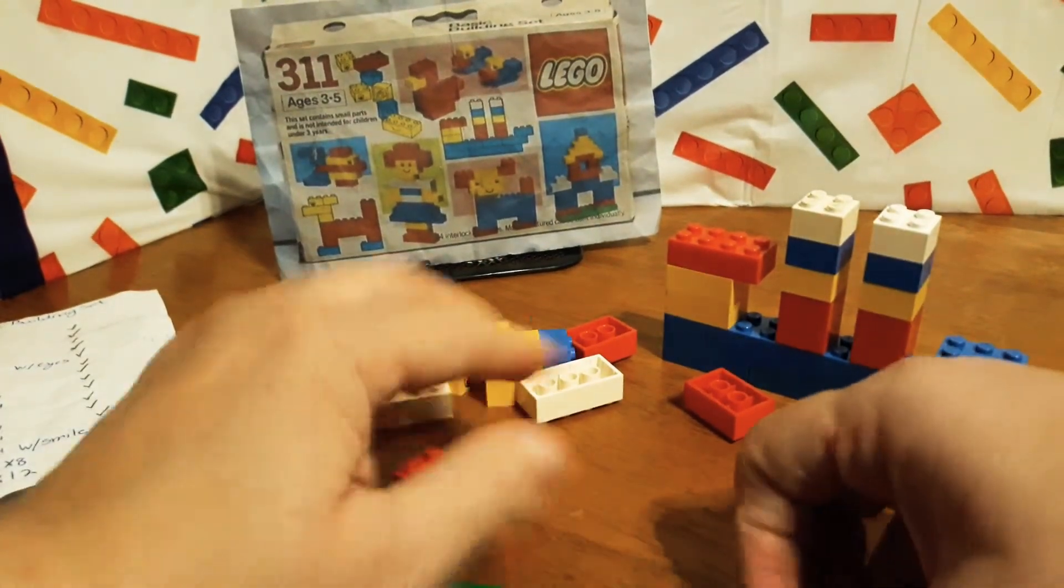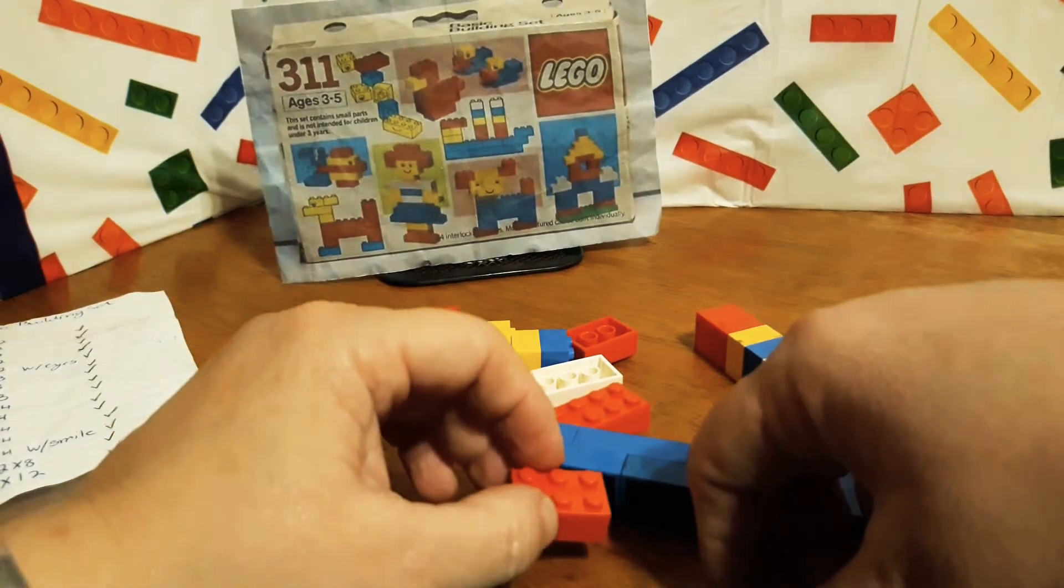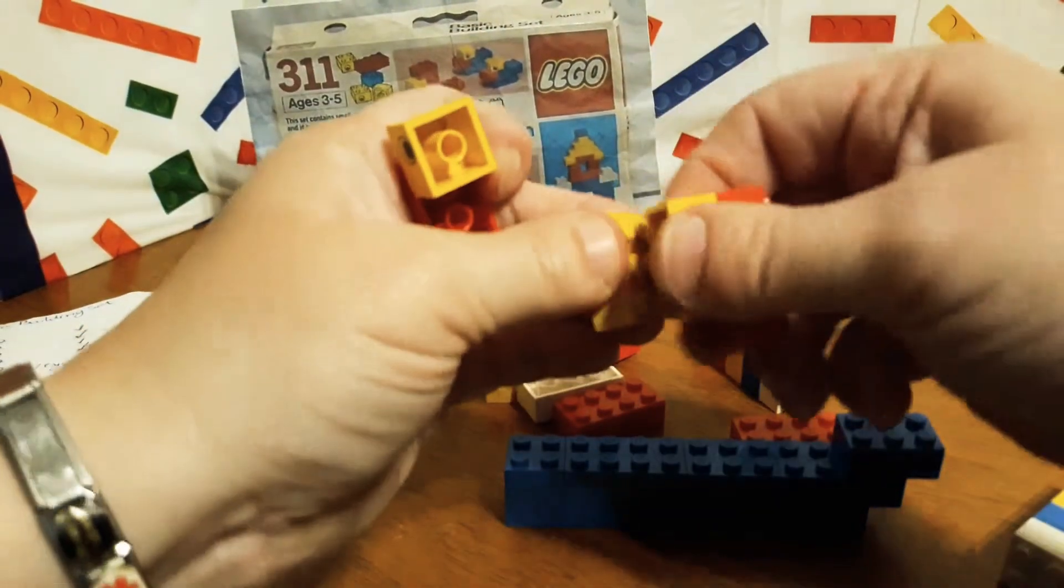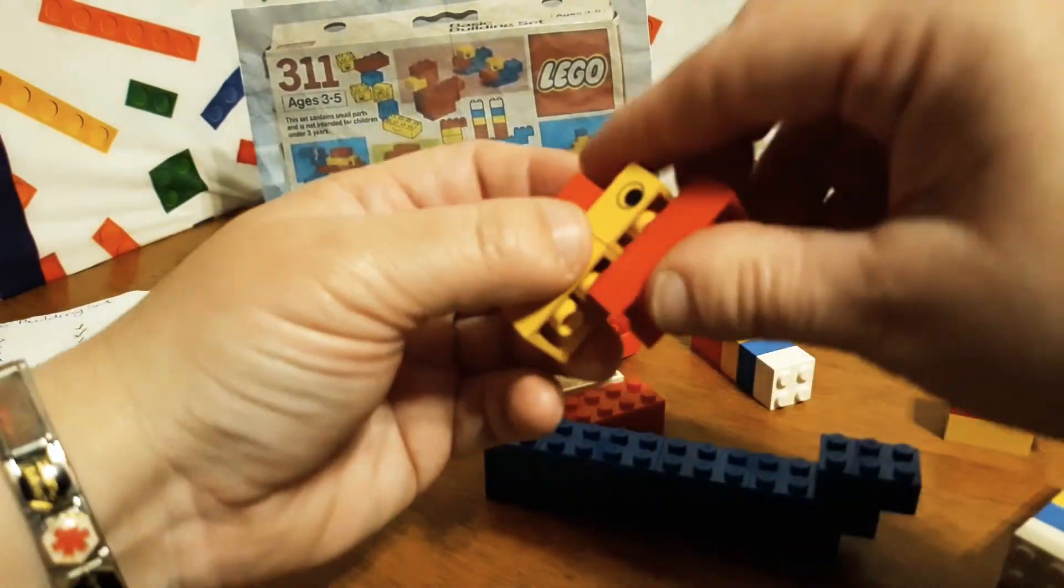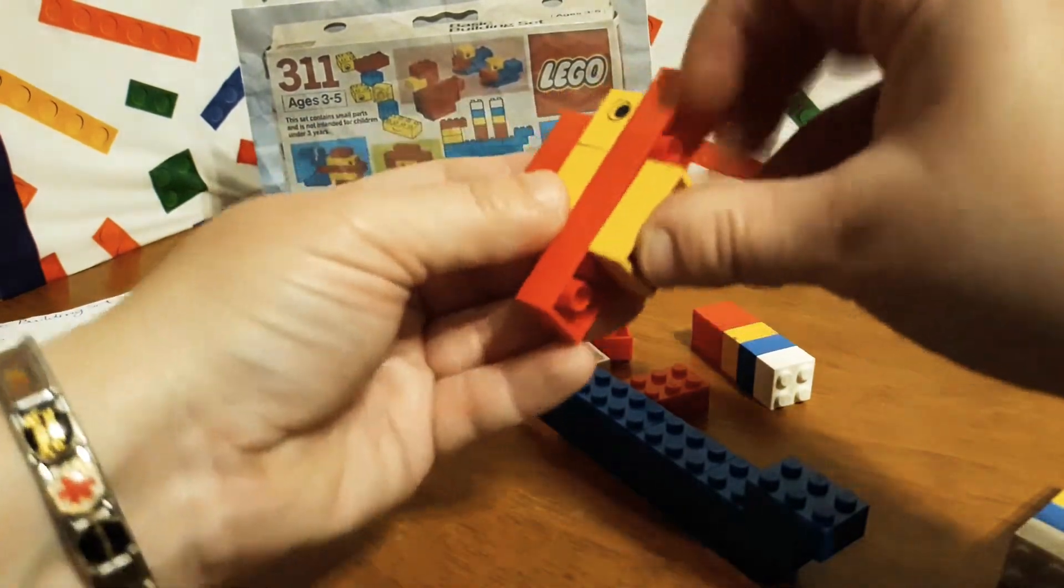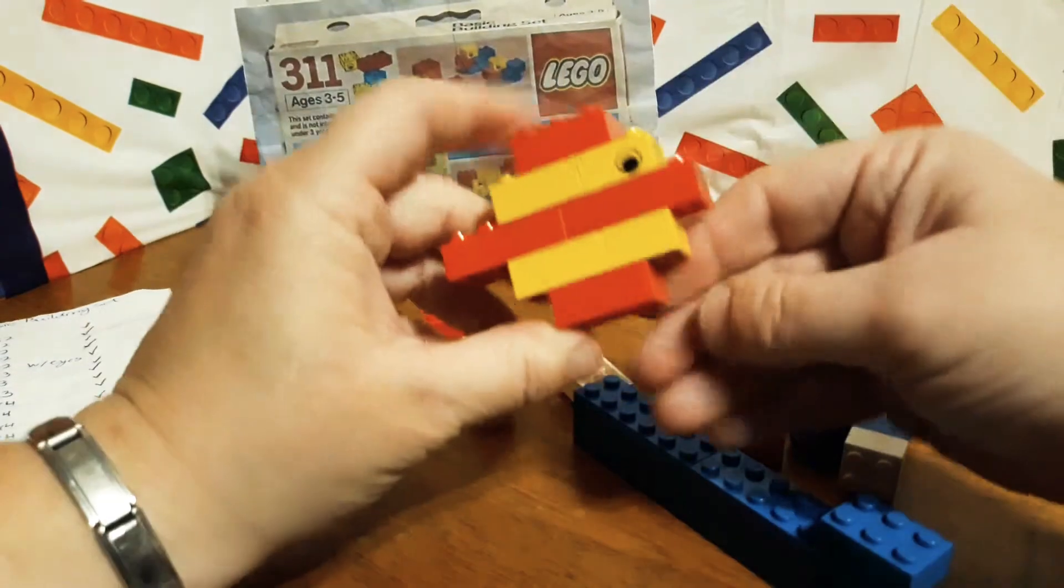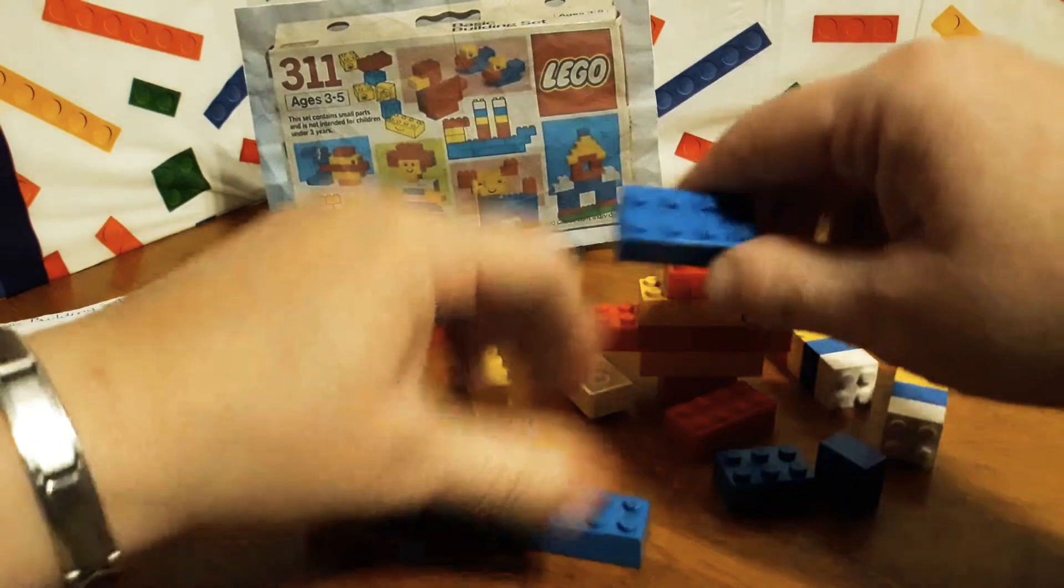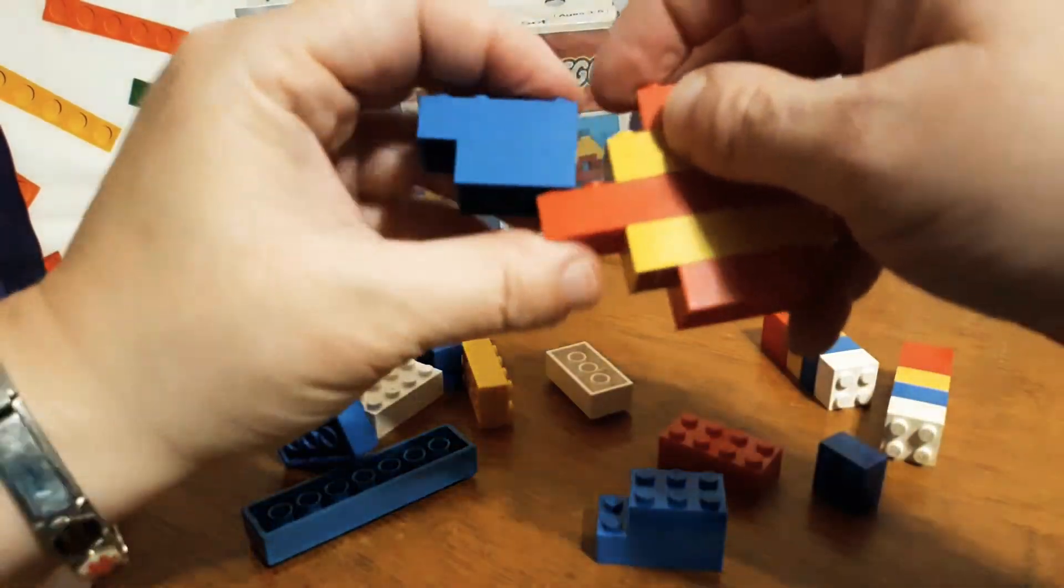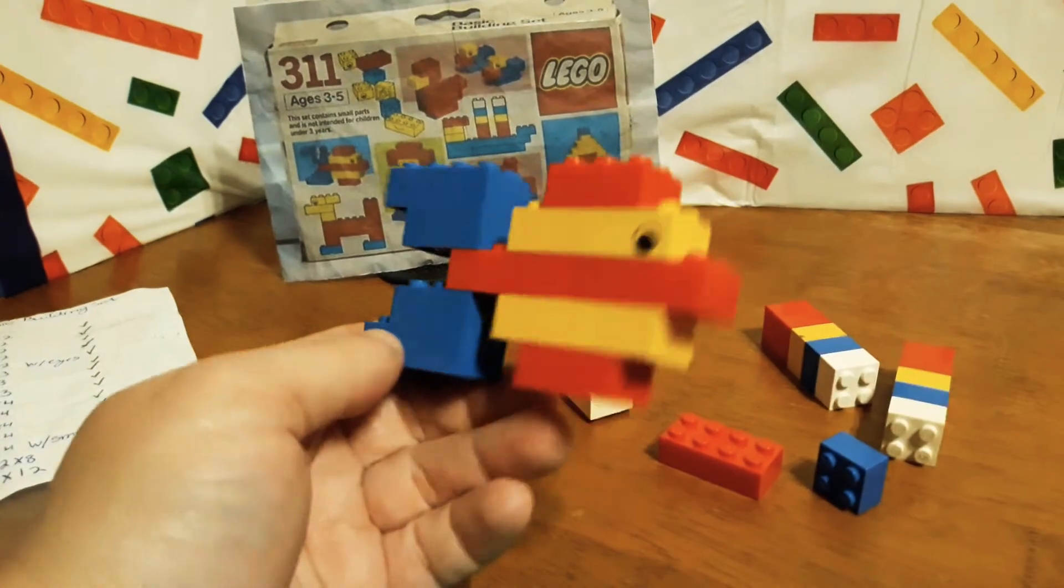I also liked the fish. I think the fish was one of my other favorites to build. We have all this red down the middle, then the tail is those two. And there's a fish, just like in the picture. That's pretty cool.